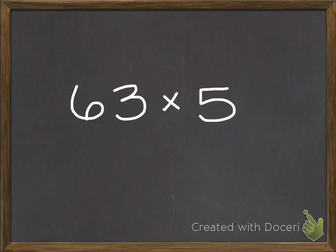Now you can try one on your own at home. Try 63 times 5. And try using the model that we draw to show our partial products.